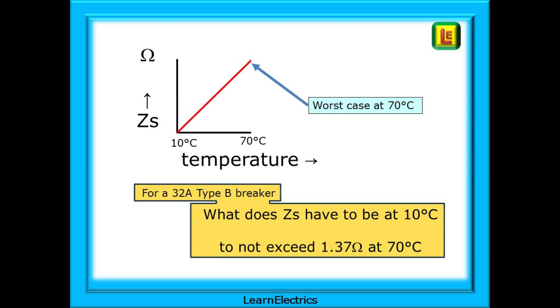That leads us to the question of why we do this. Why should we make these adjustments for temperature changes? The ZS values in the regs book are calculated at temperatures of 10 degrees Celsius but we all know that many installations will be subjected to ambient temperatures above this say 20 degrees and also as current flows through a cable heat will be generated in the conductors.